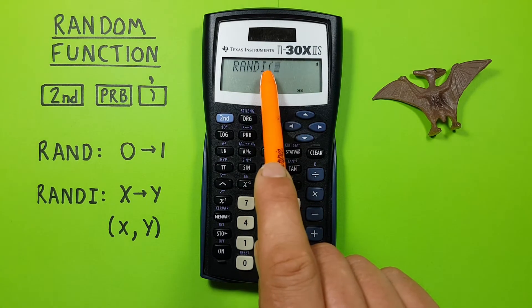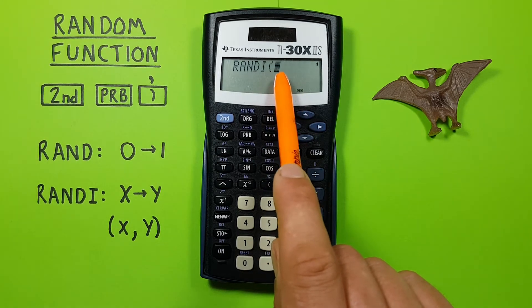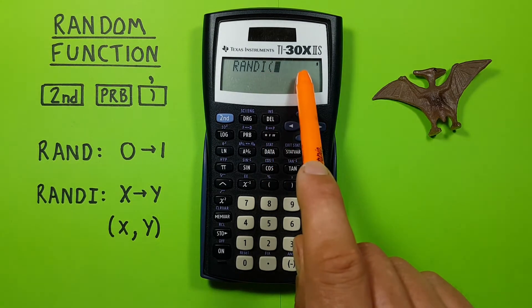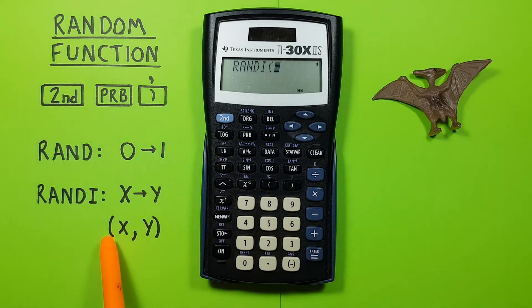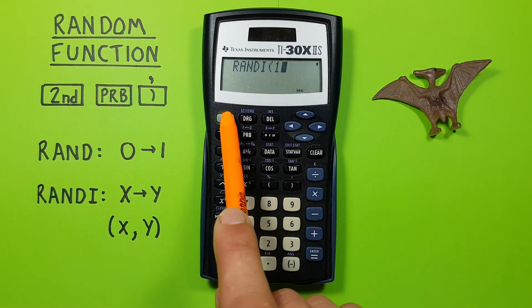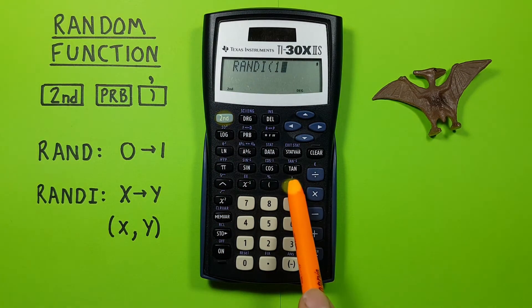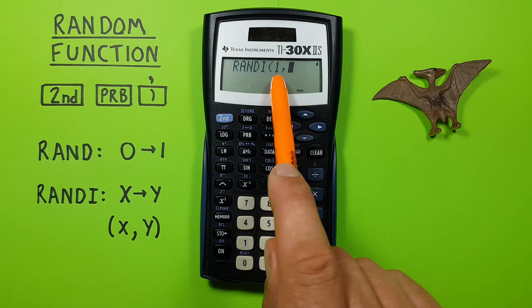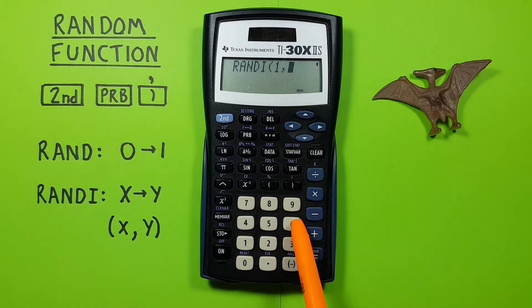We can use this to, for example, simulate a dice roll if we want to get a value between 1 and 6. We tell our calculator the two values we want, so 1, and then we have to press a comma in between them. So we press second, close bracket, and that gives us a comma, and then 6, and we'll close that.